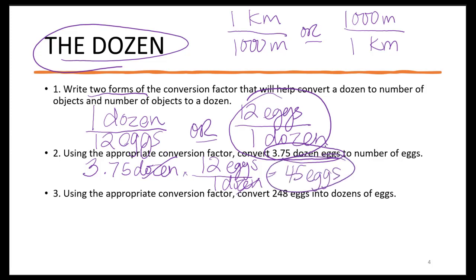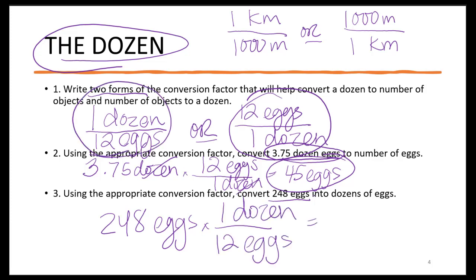Let's look at number 3. I want to use the appropriate conversion factor to convert 248 eggs into dozen of eggs. Which conversion factor would I use? Obviously the one where the eggs is on the bottom. So in this case we would do 248 divided by 12. Or 248 times 1 divided by 12 would give me 20.7 dozen, because our units cancel out diagonally.